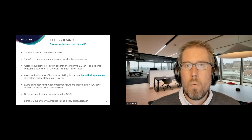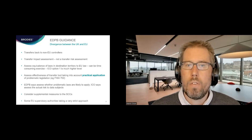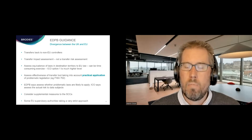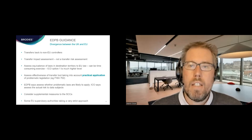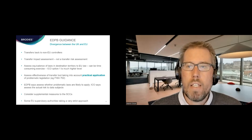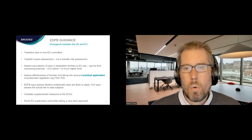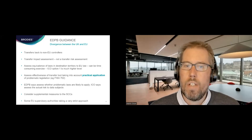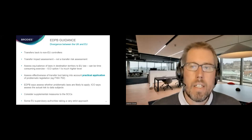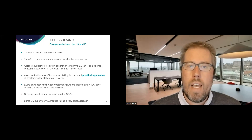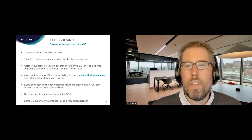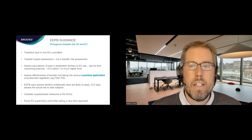With the EDPB, you're being asked to assess whether there is problematic legislation and whether that impacts upon the transfer tool you're using. You can look at the practical application — say FISA 702 in the States: has the entity in question ever been subject to a request under that? What would it practically mean for the data being transferred? But that is quite different from what the ICO is talking about — doing an assessment of the actual risks to data subjects. While the reference in the EDPB's updated guidance to practical application is helpful compared to the first draft, it's quite different and doesn't go as far as the flexibility of assessing actual risks based on the individuals involved, the data being transferred, and the likelihood of, say, the NSA being interested in that data.